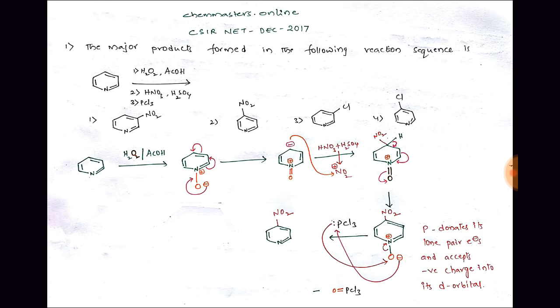That negative charge on the ring can attack the electrophile generated from the HNO3 and H2SO4 mixture. After nitration of the oxygenated pyridine ring, following the electron-pushing arrows, we get the nitrated N-oxide intermediate.